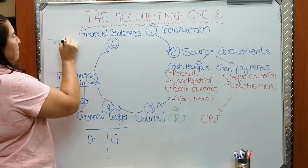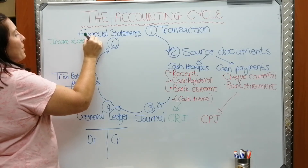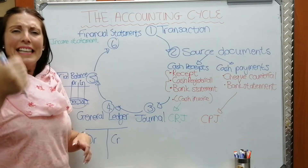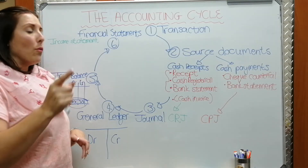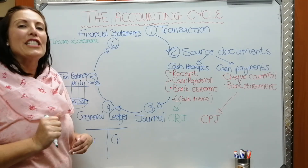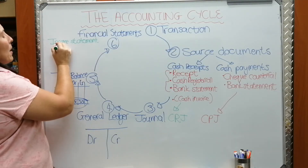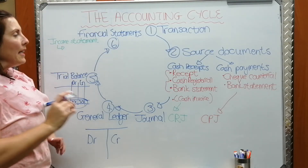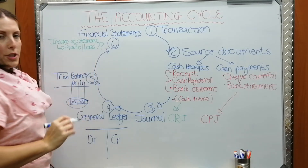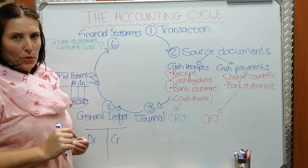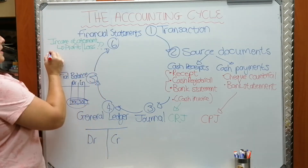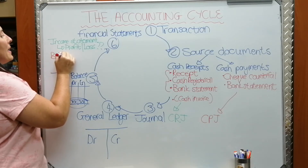The first is the income statement. From the trial balance, you take all the income accounts and all the expense accounts to prepare the income statement. At the end of the income statement we determine whether the business has made a profit or a loss, which is obviously very important for the owner to see.